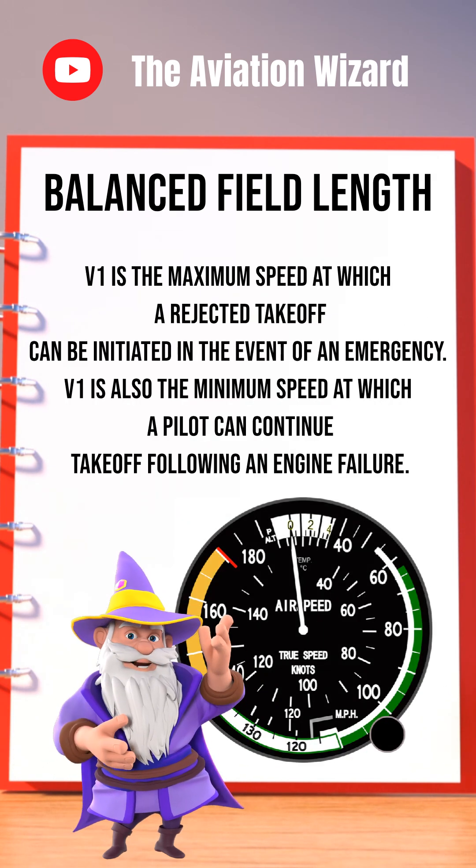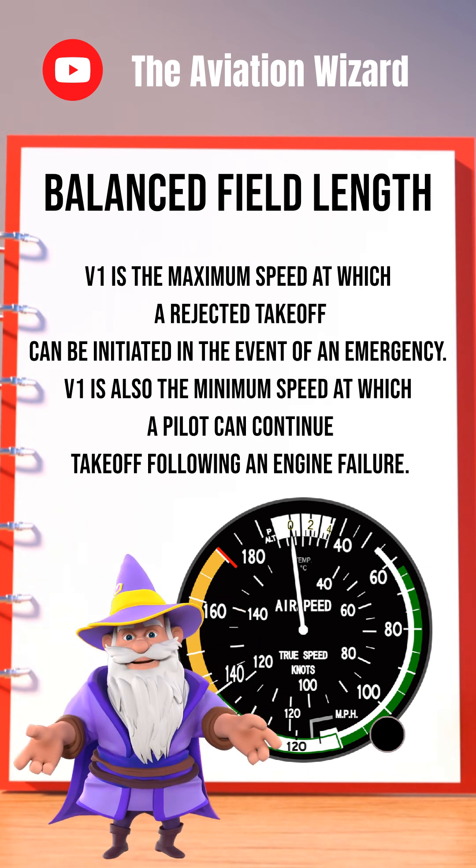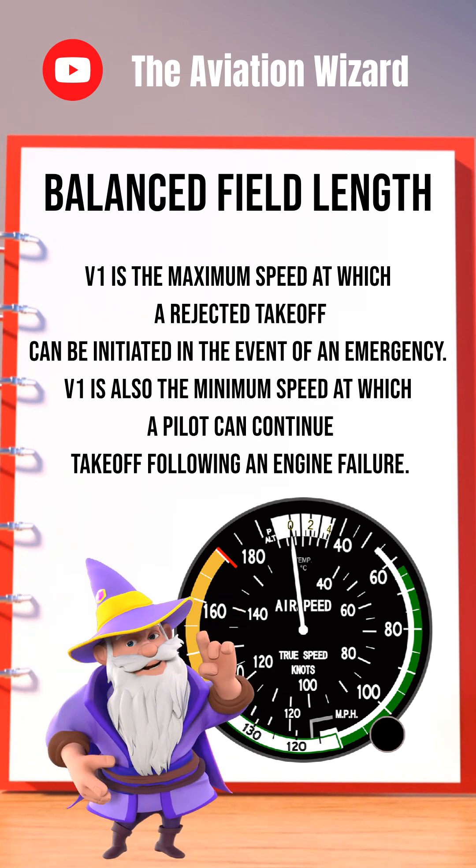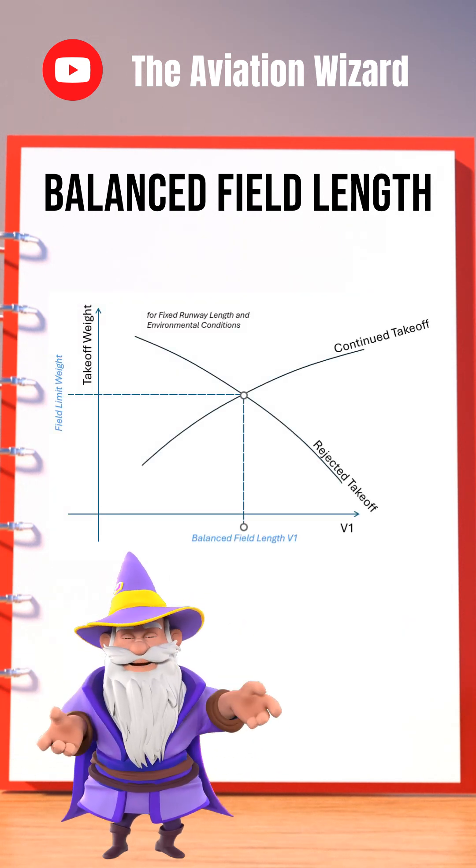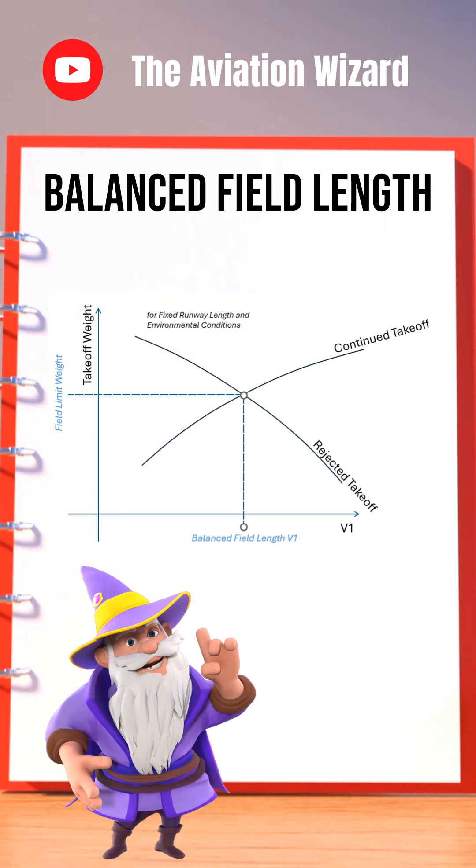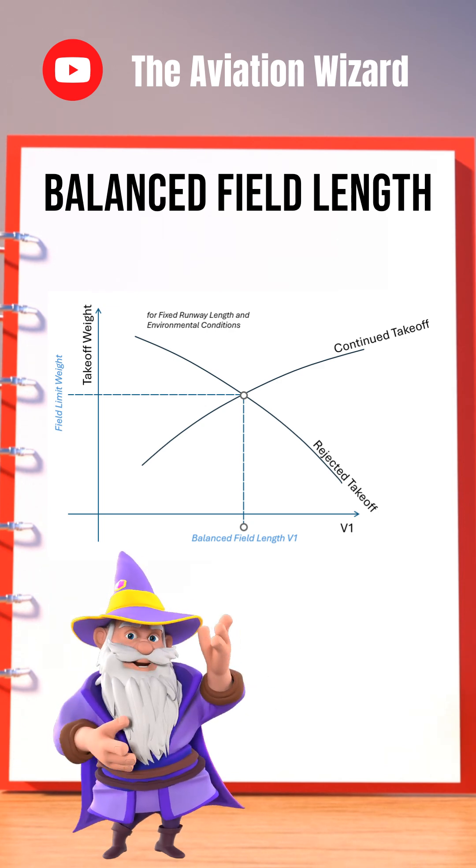V1 is the takeoff decision speed. If an engine fails before V1, you stop. After V1, you go. The balanced field is where the accelerate go and accelerate stop distances are exactly the same, giving you a safety-optimized decision point.